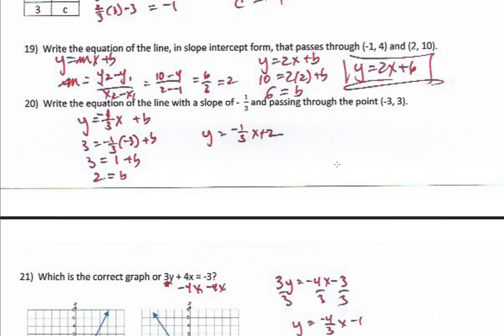Number 19: write the equation of a line in slope-intercept form passing through (negative 1, 4) and (2, 10). The general form is y equals mx plus b. Find slope first: (10 minus 4) over (2 minus negative 1) equals 6 over 3, which is 2. So the equation is y equals 2x plus b. Using the point (2, 10): 10 equals 2 times 2 plus b, so 10 equals 4 plus b, giving b equals 6. Final answer: y equals 2x plus 6.